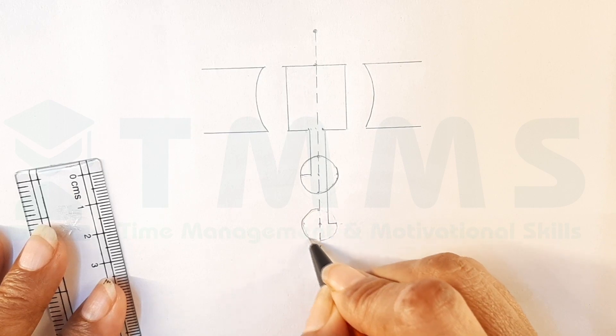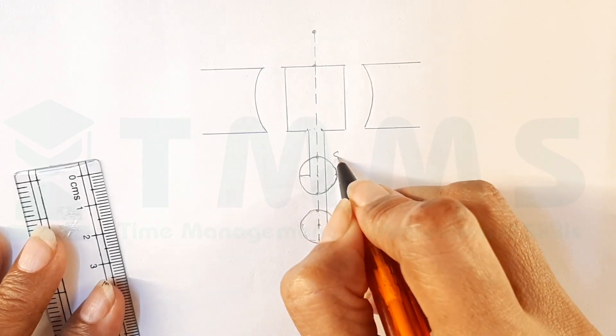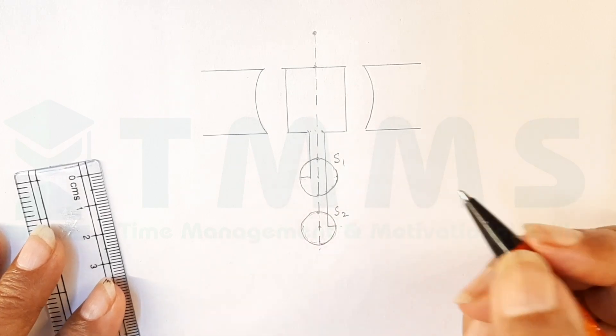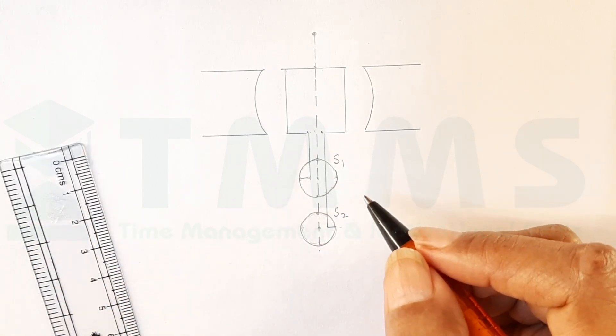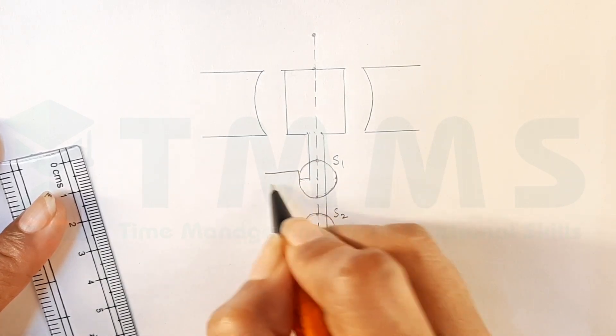So, now, we have another ring here. Now, these 2 are S1 and S2 respectively. What are these? These are the slip rings. These are connected with the carbon brushes.